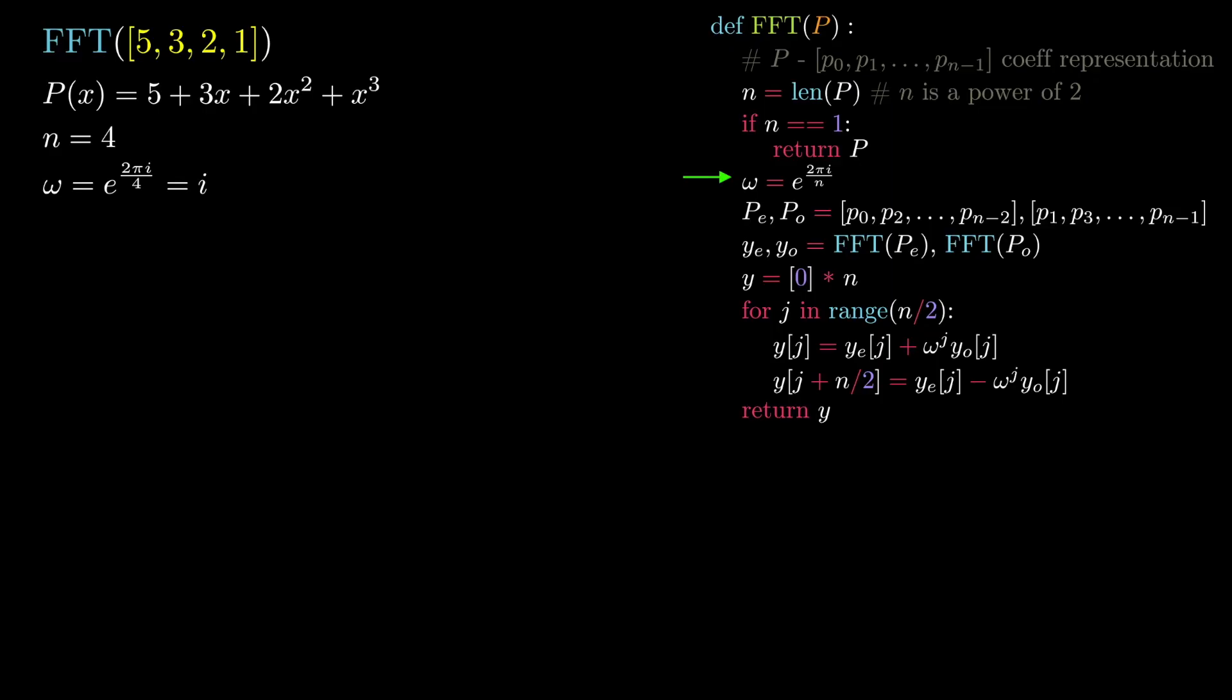What this means for us is that this will make sure that the roots of unity that we evaluate the polynomial at are the fourth roots of unity, which corresponds to the following points on the unit circle.